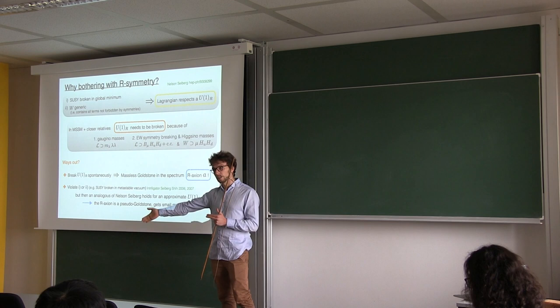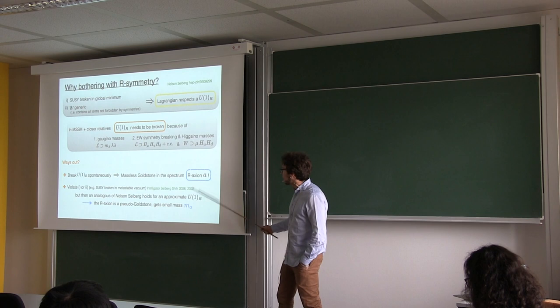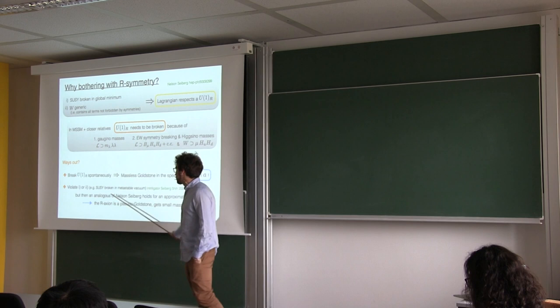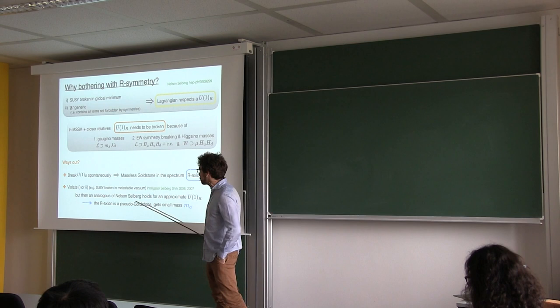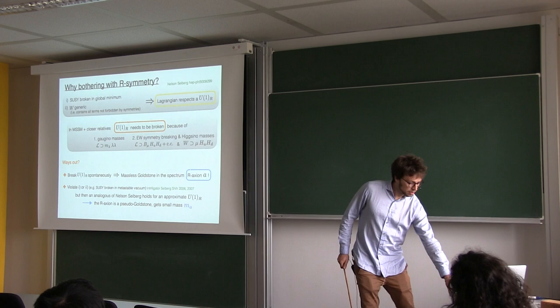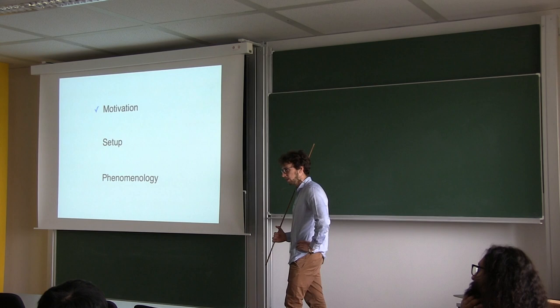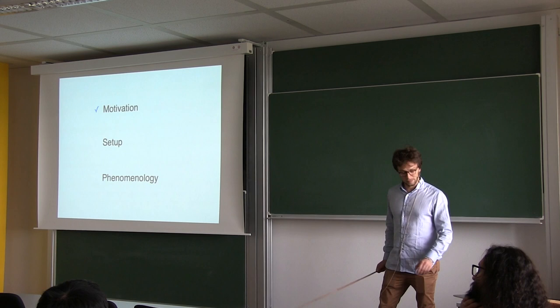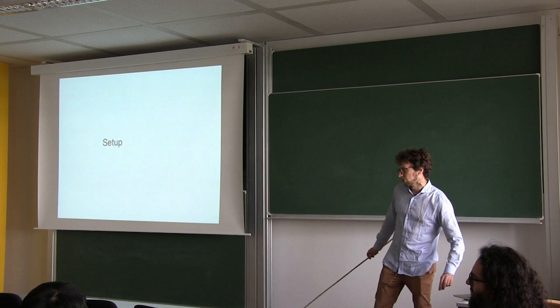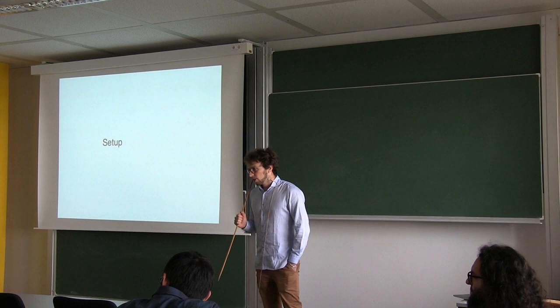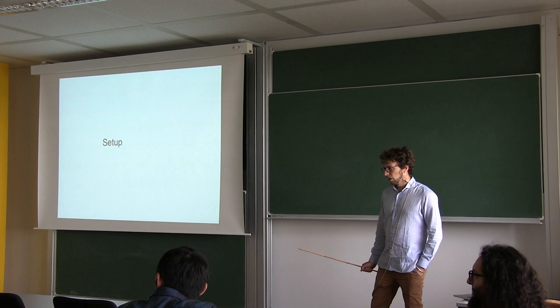This was explored also for other reasons 10 years ago. And one can show that in these theories, an analogous of Nelson-Seiberg holds for an approximate U(1)_R, meaning that the R-axion is not a pure Goldstone anymore, but it's a pseudo-Goldstone and gets a small mass M_A. Now, this was just—remember back in the 90s, that this was one of the reasons that people didn't do gauge mediation, and then they were just—exactly, I will come to that paper in a couple of slides. Also, if you go to supergravity, you can gauge this U(1)_R solution.